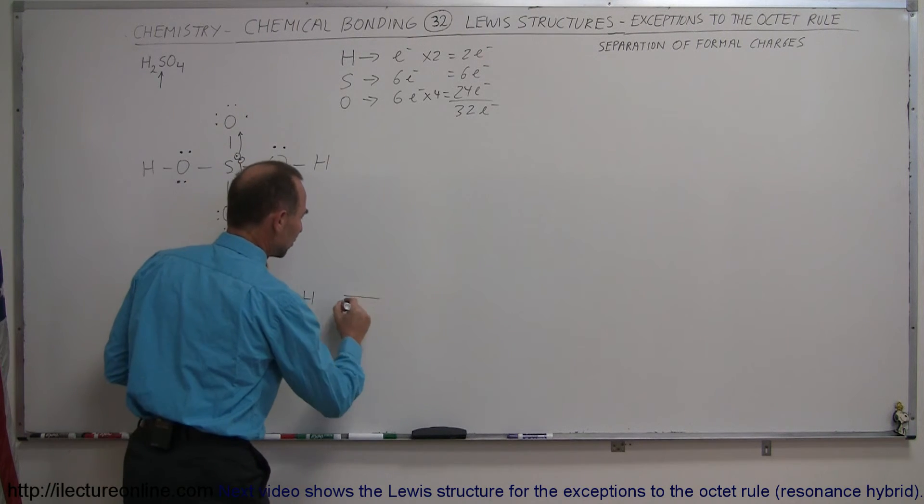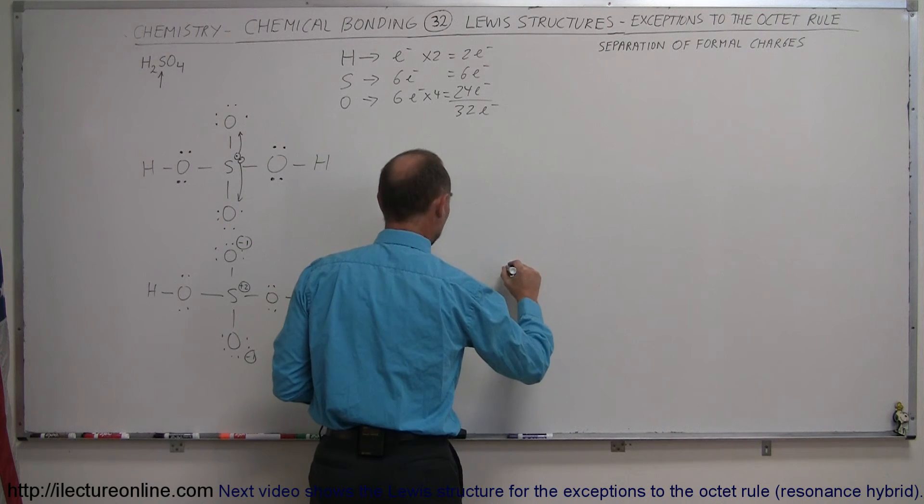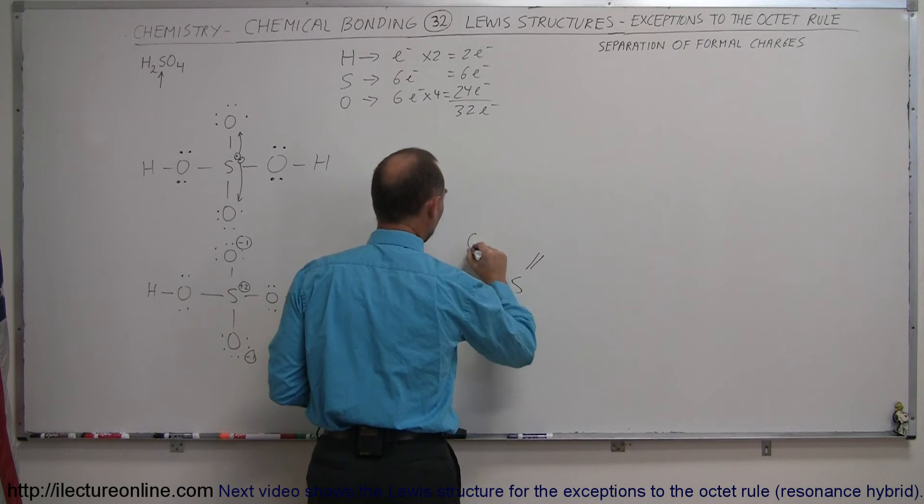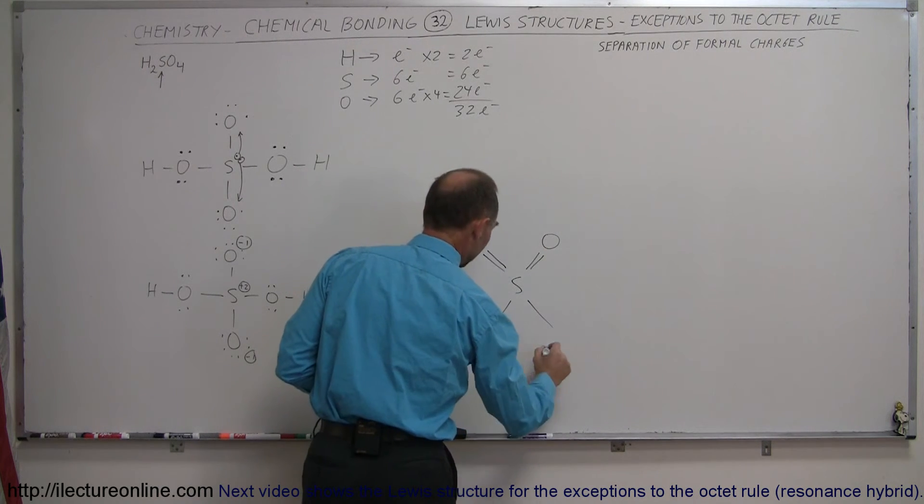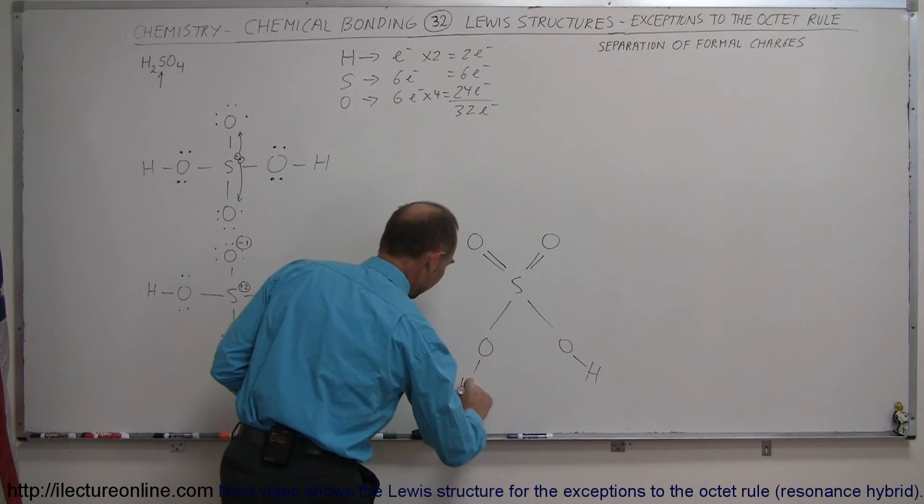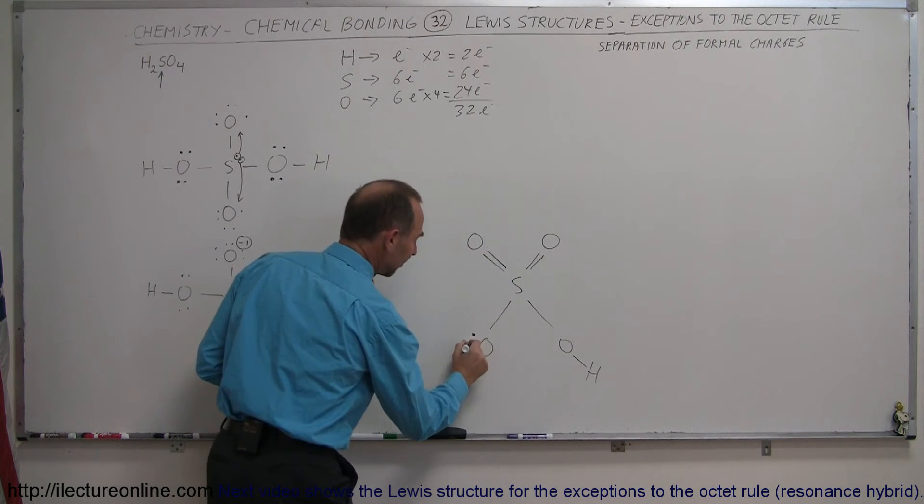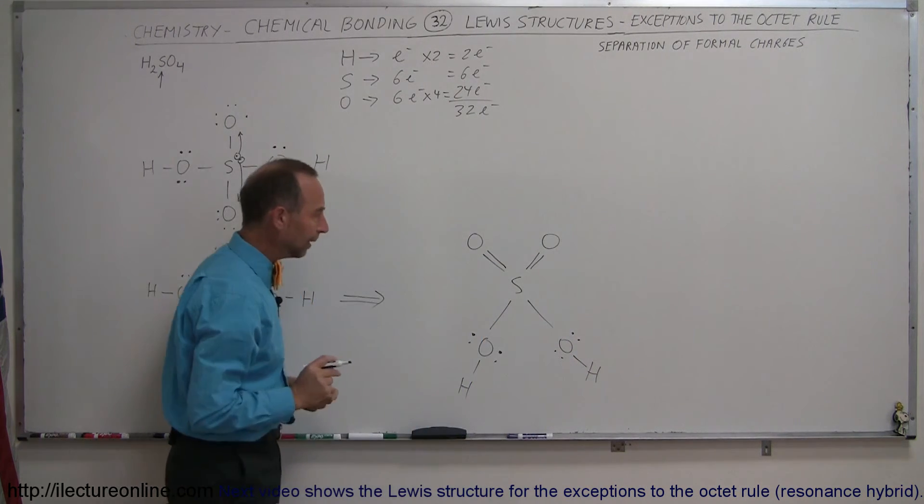So let's redraw the molecule again. We have sulfur over here, we have then the two oxygens forming double bonds, two forming single bonds, and of course the ones that form single bonds will also have hydrogen on the other side. So these will still be in the same format as the two that we had before, like that.